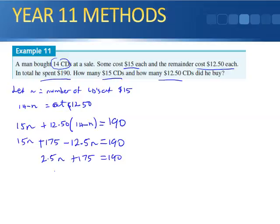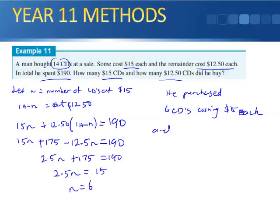So n equals 6. So he purchased 6 CDs costing $15 each, and 14 minus 6, which is 8 CDs costing $12.50.